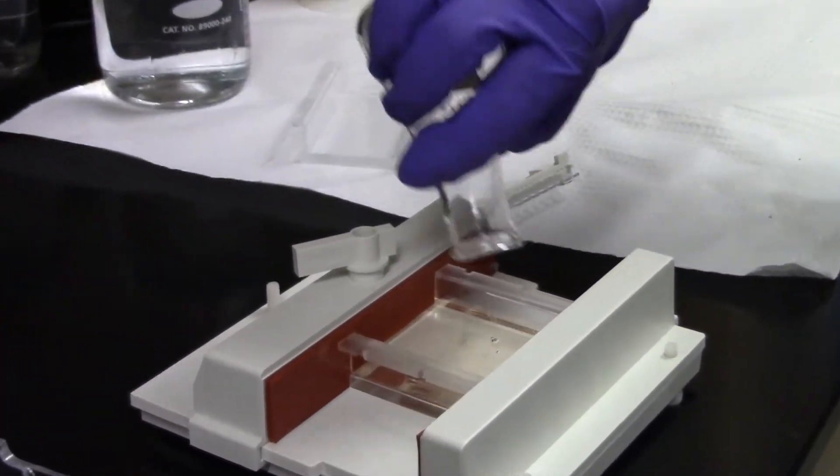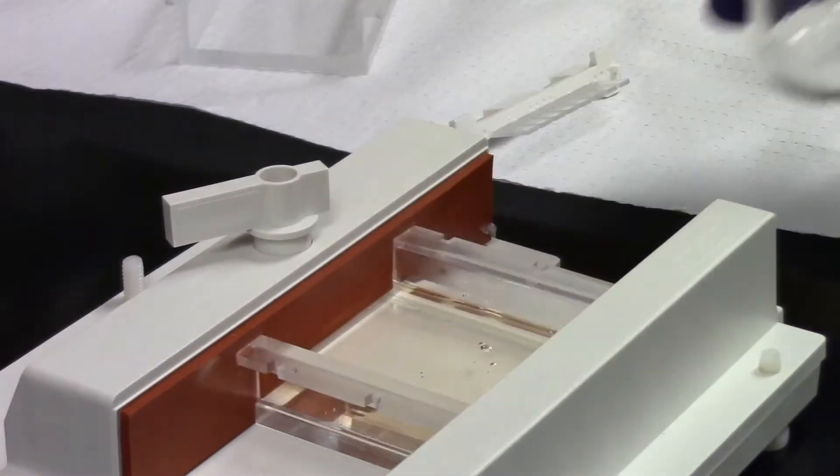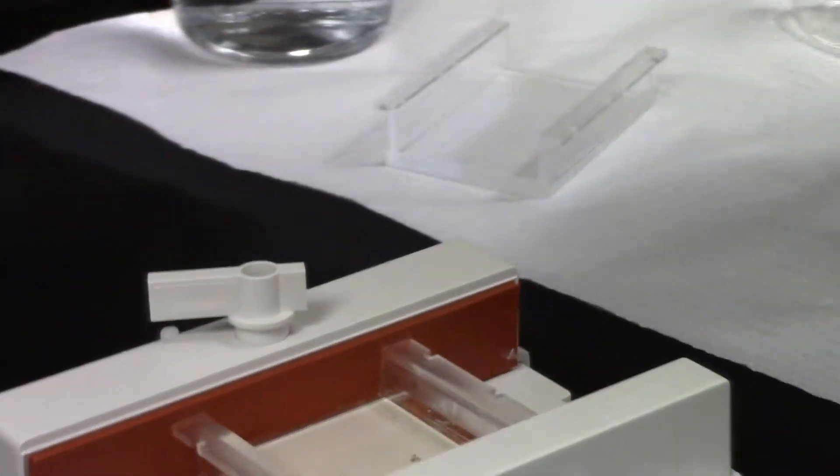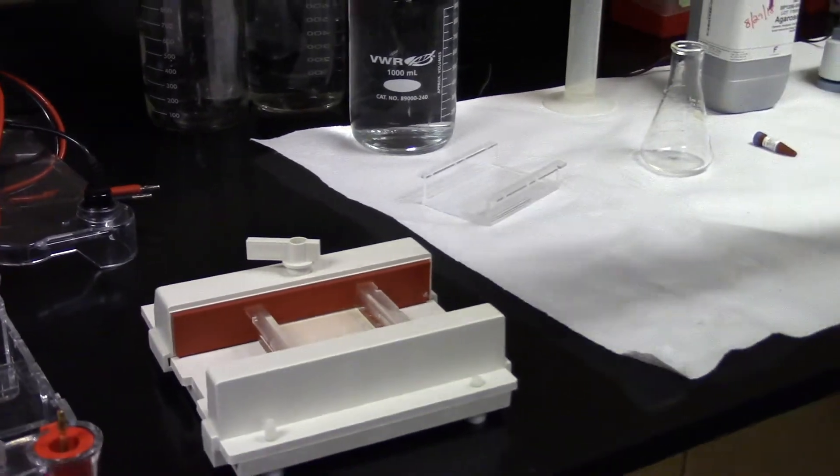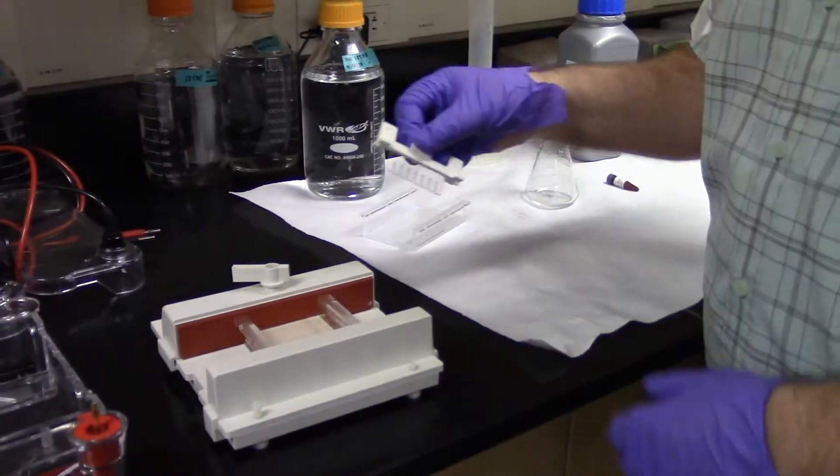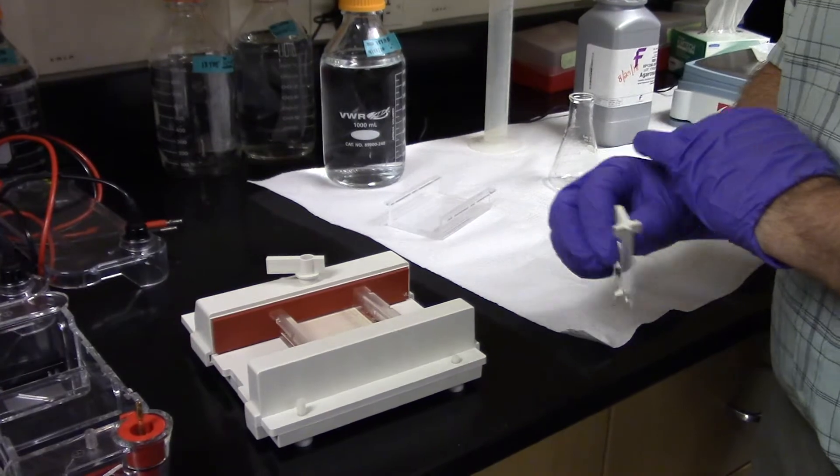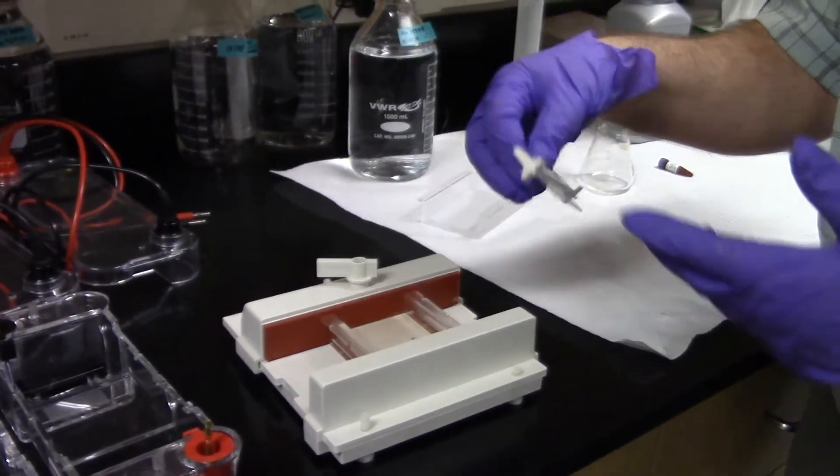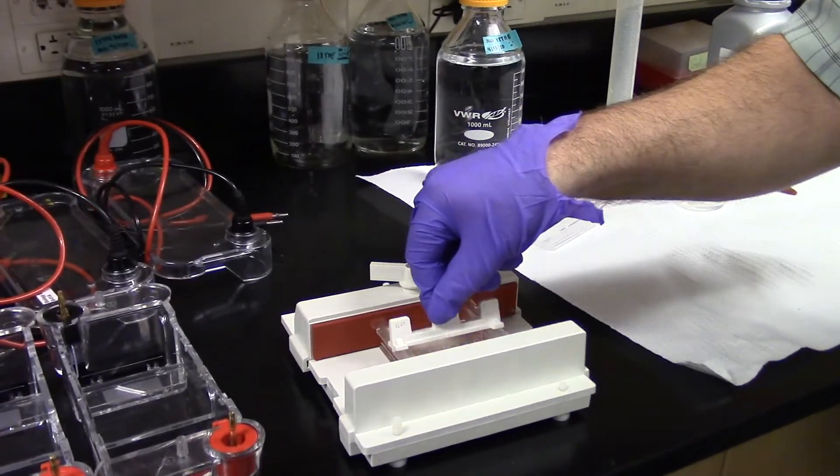And before it cools enough to become completely solid, like making jello, which is just gelatin fibers melted to make polymers. And when it cools in the fridge, you get a gel. We're making a gel here.